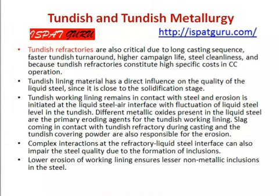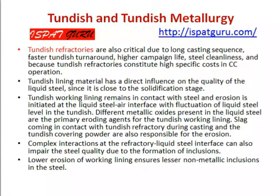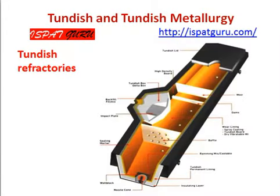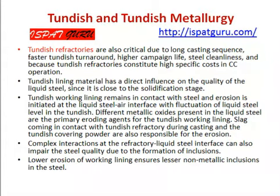Tundish lining materials have a direct influence on the quality of the steel since it is close to the solidification stage. The tundish working lining remains in contact with steel; erosion is initiated at the liquid steel-air interface with fluctuation of liquid steel level in the tundish. Different metallic oxides present in the liquid steel are the primary eroding agents for the tundish working lining. Slag coming in contact with the tundish refractory and the tundish covering powder are also responsible for erosion. Complex interactions at the refractory–liquid steel interface can also impair steel quality due to the formation of inclusions. Lower erosion of the lining ensures fewer non-metallic inclusions in the steel.